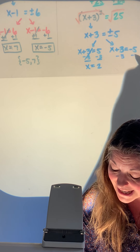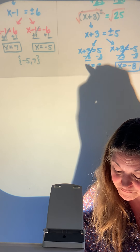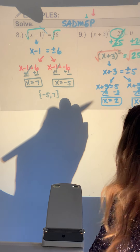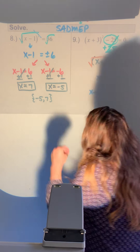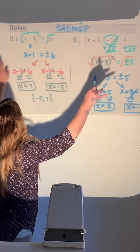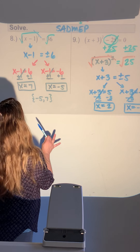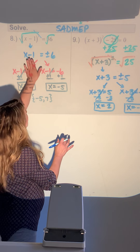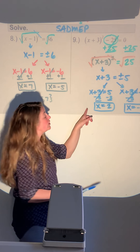Subtracting 3 from both sides: the first equation gives x equals 2, and the second gives x equals negative 8. For these problems where x is part of a quantity, do not try to distribute or FOIL. Concentrate on getting that squared quantity all by itself, then square root and continue solving.